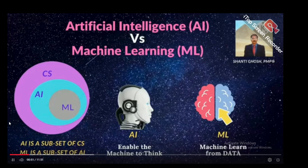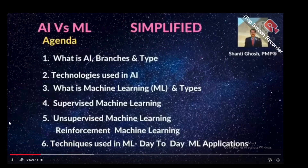Artificial Intelligence is a top branch of computer science. Machine Learning is a subset of Artificial Intelligence. In simple words, Artificial Intelligence enables the machine to think — that is, the computer system. Machine Learning is a machine learning from data using statistical techniques.